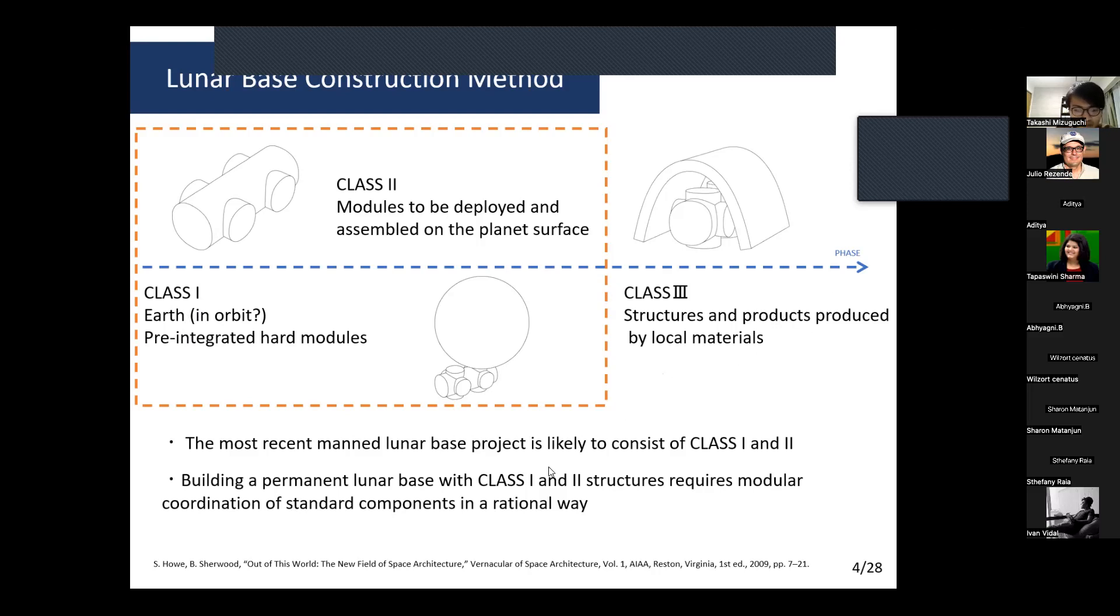Building a permanent lunar base with CLASS I and CLASS II structures requires modular coordination of standard components in a rational way.